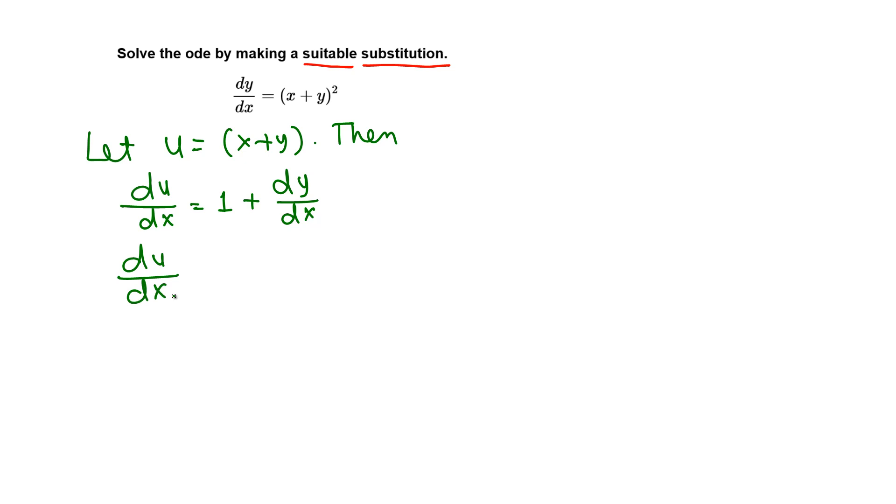With this substitution, the ODE becomes du/dx minus 1 equals u². Now this is separable because we can move 1 over.